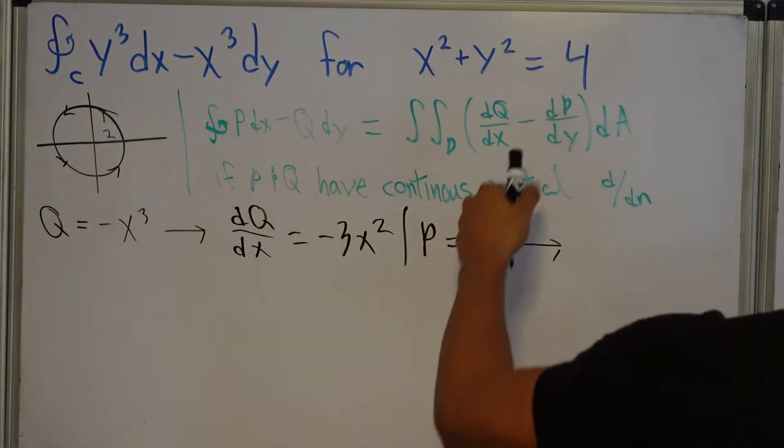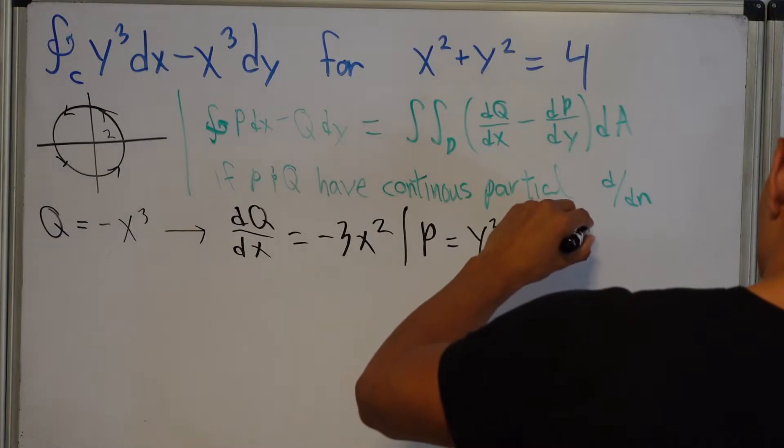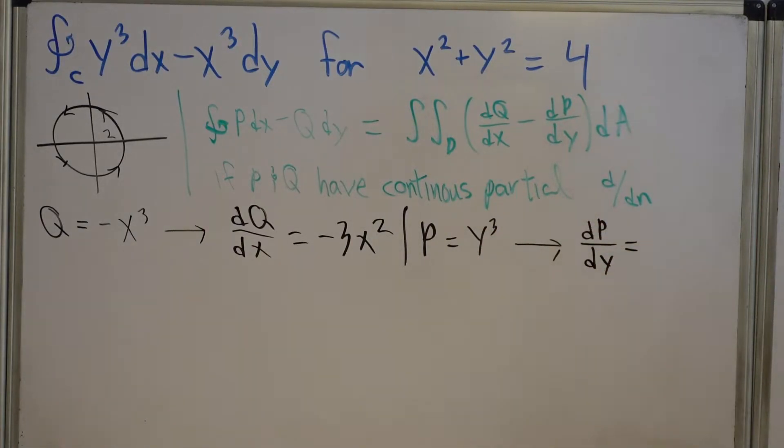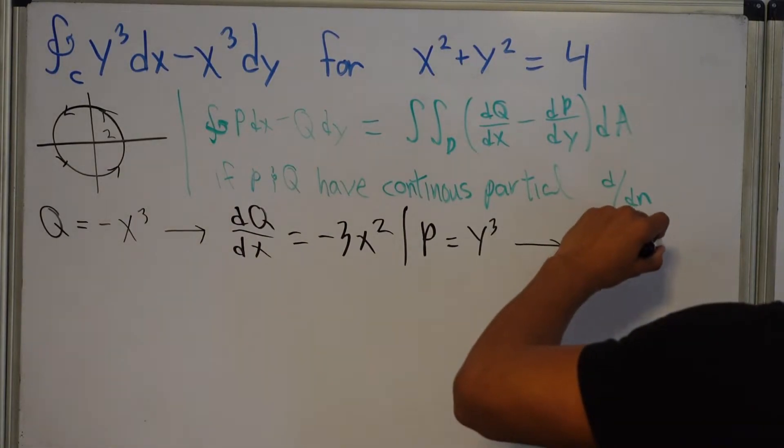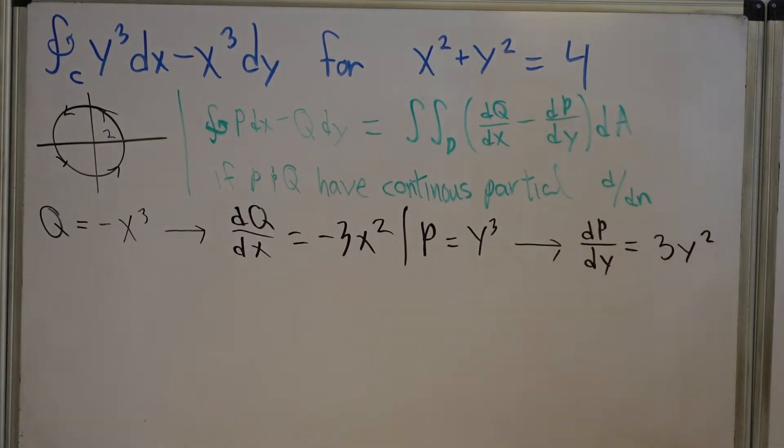Okay, and then we want dP/dY, dP/dY, which is Y. It's going to be 3Y squared. Okay.